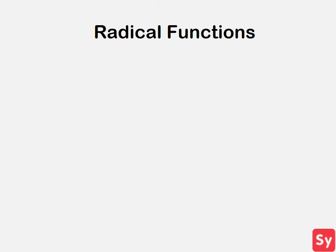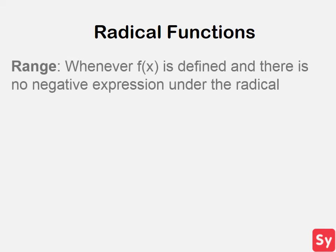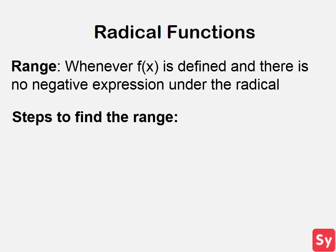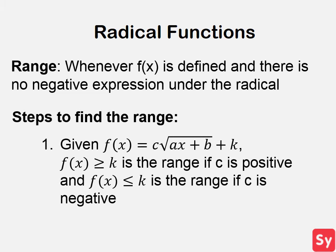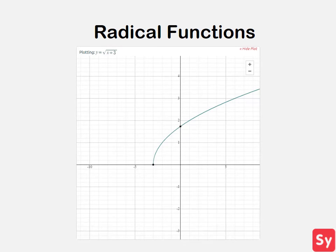Now we will talk about the range of radical functions. The range of radical functions is when f(x) is defined and there is no negative expression under the radical. In order to find the range, when you are given a radical function in this form, the range is when f(x) is greater than or equal to k when c is positive, and when c is negative, the range is when f(x) is less than or equal to k. Here's an image of a radical function, the square root of x plus 3, to better understand.